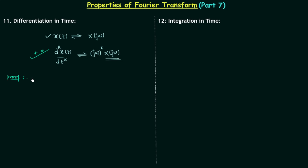Now we will prove this property. To prove it, I will use the formula of the inverse Fourier transform. We know the inverse Fourier transform gives us the time domain signal x(t), and it is equal to (1/2π) times the integration from minus infinity to infinity of X(jω) multiplied by e^(jωt) dω. Now we will perform the differentiation on both sides.